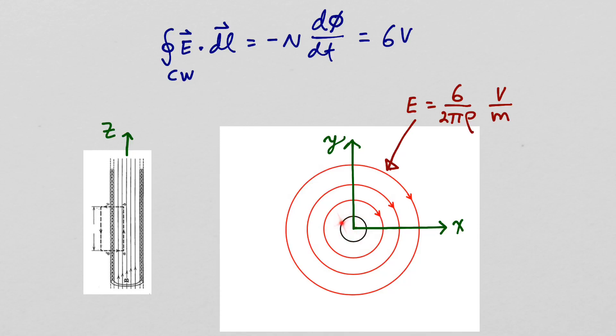To the right here is a cross section through the solenoid. The solenoid is sitting here and what we found was that the resulting electric field intensity was circles around the solenoid in the clockwise direction.